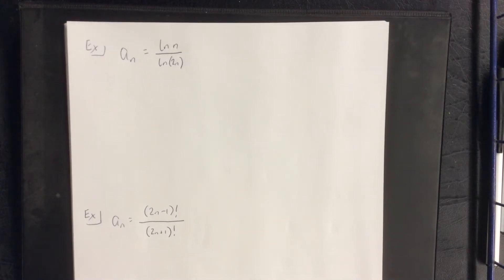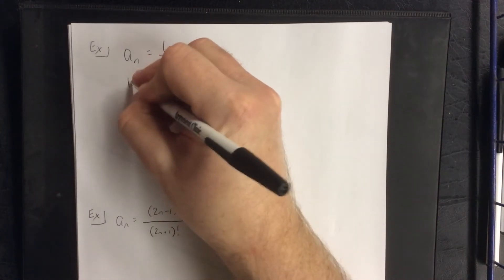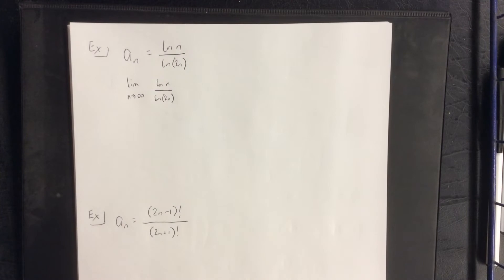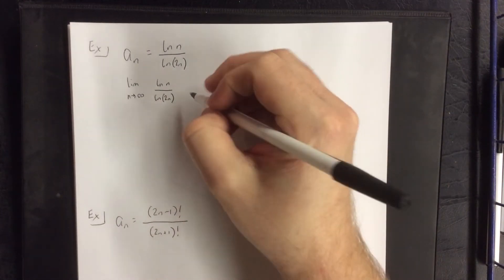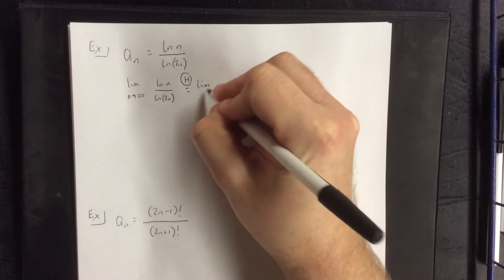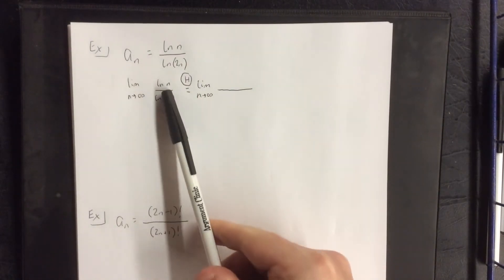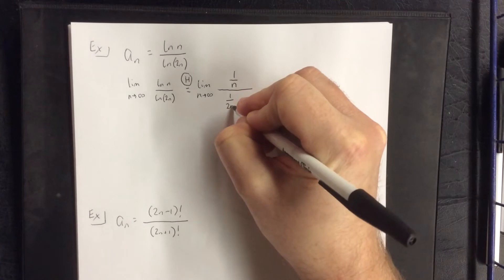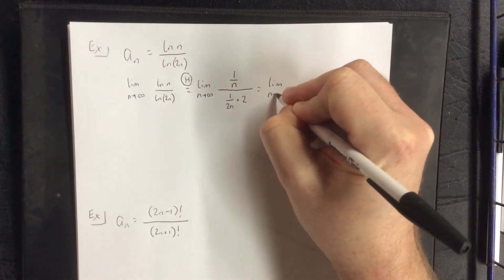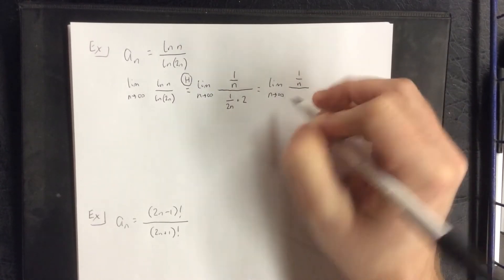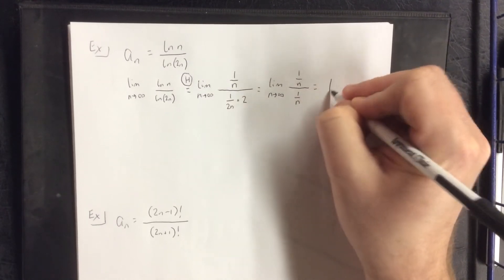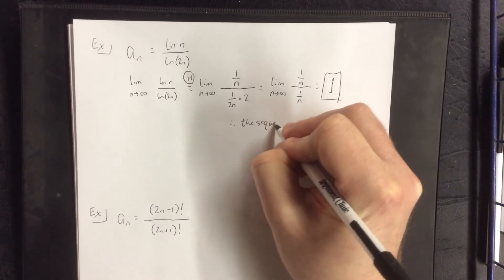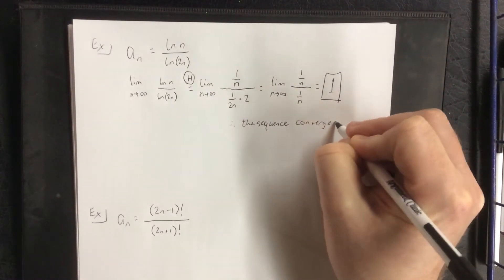Next, a_n = ln(n) / ln(2n). We take the limit as n goes to infinity. The numerator and denominator both go to infinity, so we apply L'Hôpital's rule. The derivative of ln(n) is 1/n. The derivative of ln(2n) is (1/2n) · 2 = 1/n by the chain rule. So we get (1/n) / (1/n) = 1. Therefore, the sequence converges to 1.